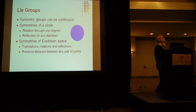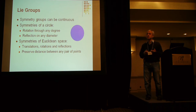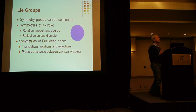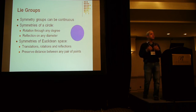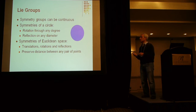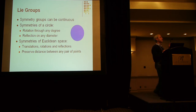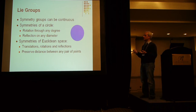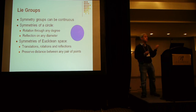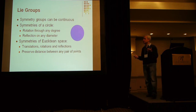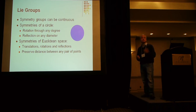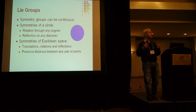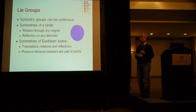The group of symmetries of a square is discrete. Of course, we can also have continuous groups. They are called Lie groups in honor of the mathematician Sophus Lie who invented them. A simple example of a continuous symmetry group is the symmetries of a circle — I can rotate a circle through any degree, and I can reflect it on any diameter, and it's still the same circle. And the first step towards what we're really after is the Euclidean group: symmetries of Euclidean space — transformations that preserve the distance between any pair of points. This includes all translations, rotations, and reflections.